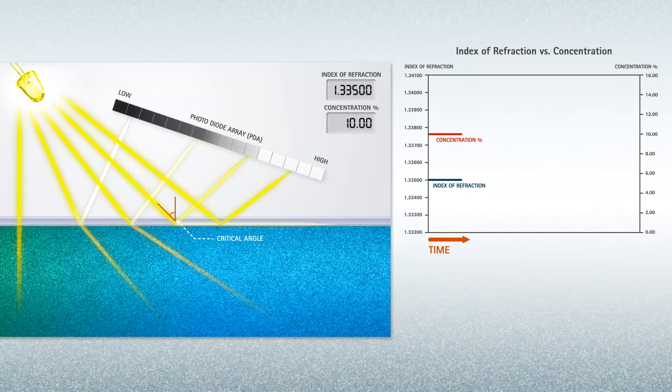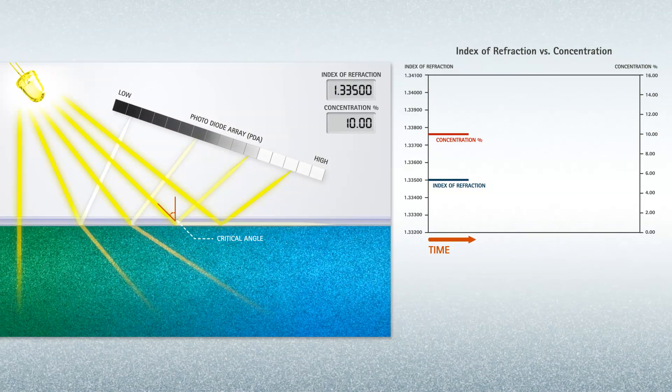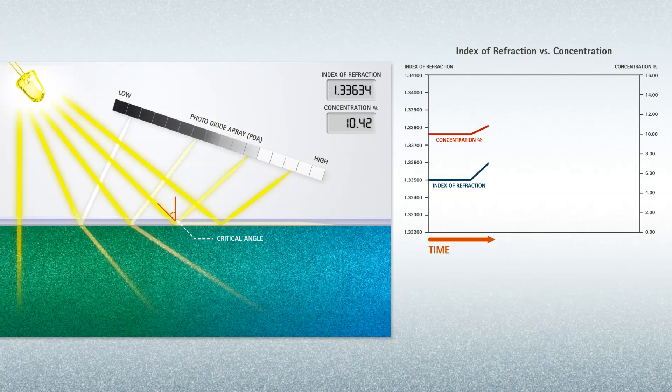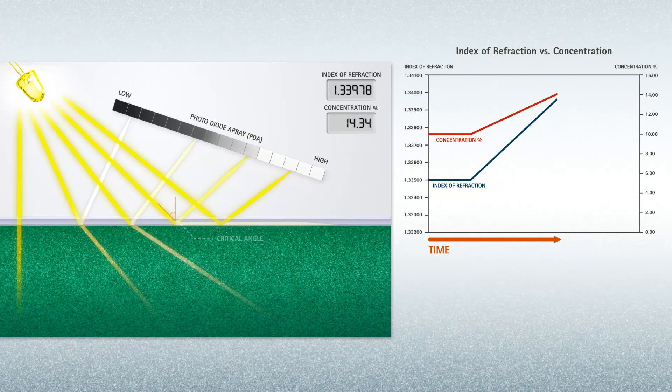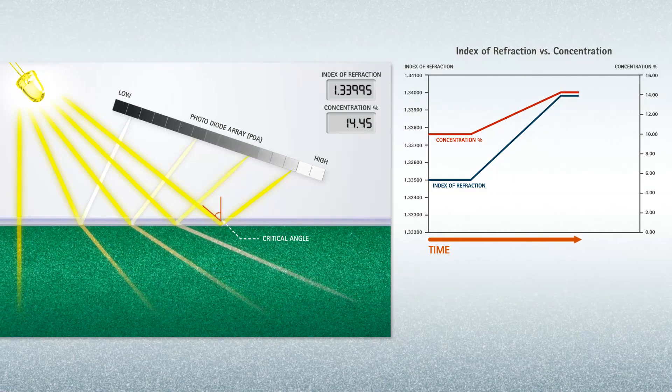As the liquid concentration changes, so does the measured critical angle. The Index of Refraction measurements are continuous, while at the same time, average readings are made every 100 milliseconds.